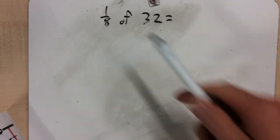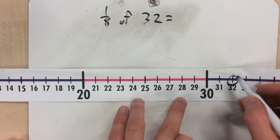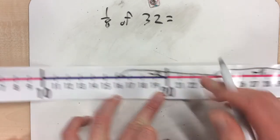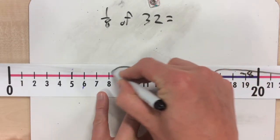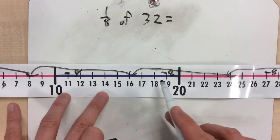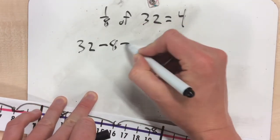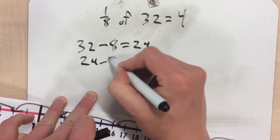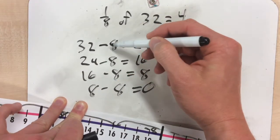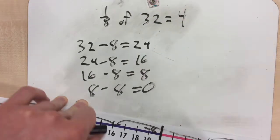For the last problem today, I'm going to look at 1/8 of 32. We'll start with our number line on 32: 32 take away 8 is 24 — that's 1. 24 take away 8 is 16. 16 take away 8 is 8. And 8 take away 8 is 0. We had to take away 4 eights, so 1/8 of 32 equals 4.